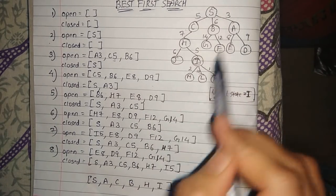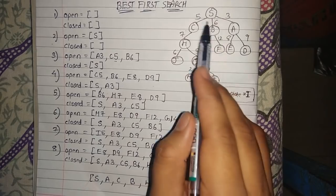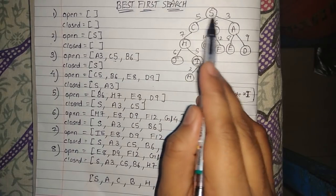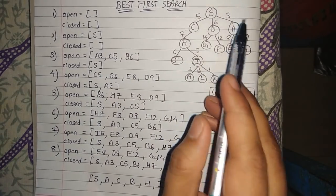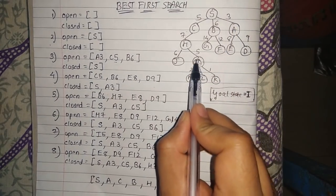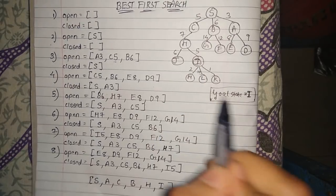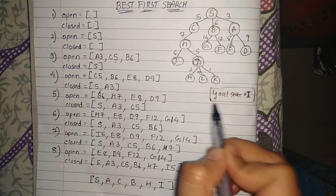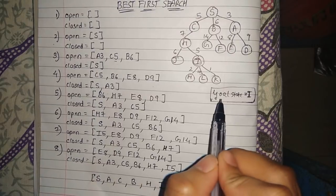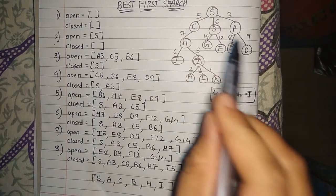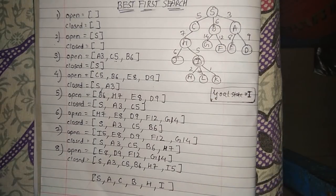In this example, a sample tree is given and with each and every node a heuristic value is associated. We have to reach a goal state — here it is given to be node i. So our goal state is i. Let's see how to reach the goal state using Best-First Search.